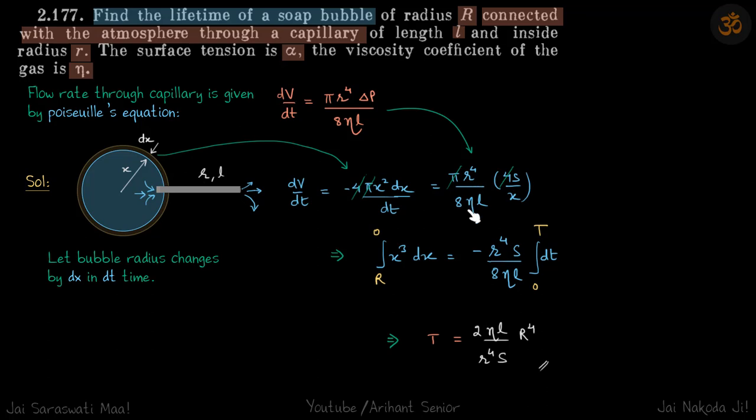And second way of writing volume flow rate is by Poiseuille's equation. So pi r power 4 by 8 Eta L and delta P. We know that the excess pressure inside the soap bubble is 4S by R. R in this case is x, so 4S by x.